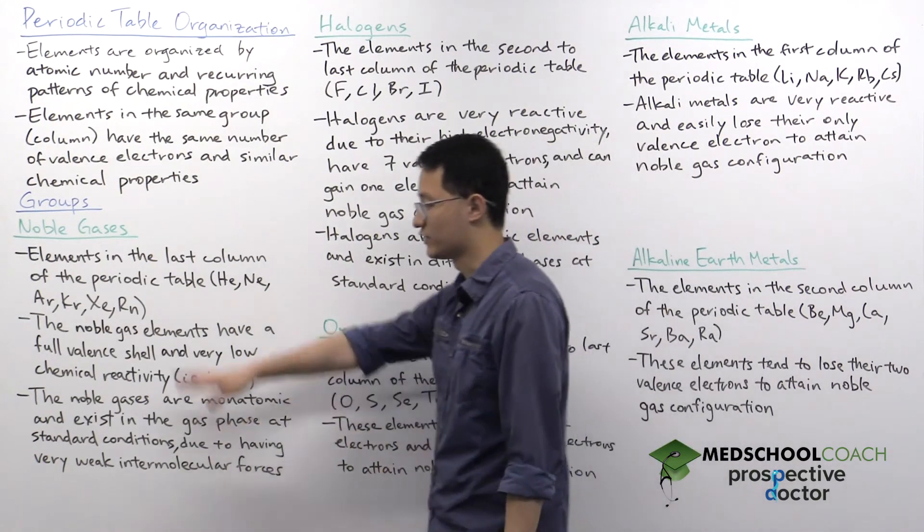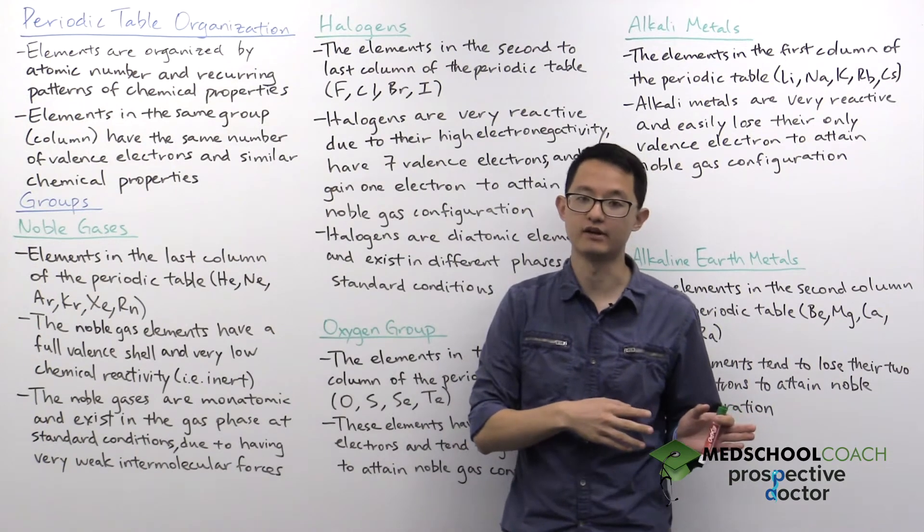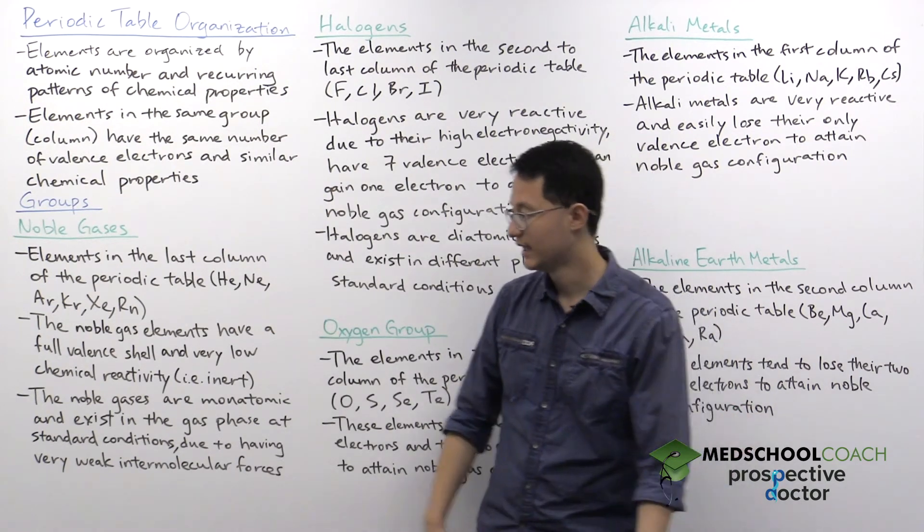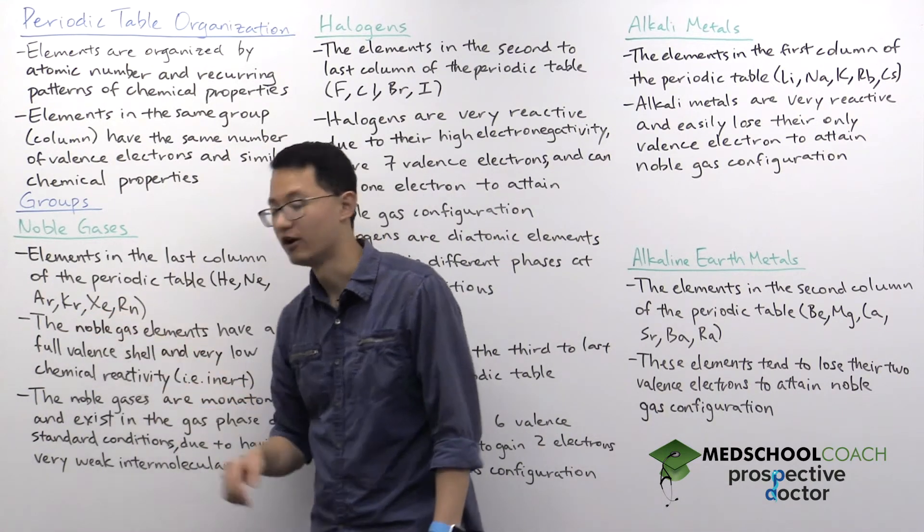Our first group is the noble gases. The noble gases are in the far right of the periodic table. So in the last column, this includes helium, neon, argon, krypton, xenon, and radon.